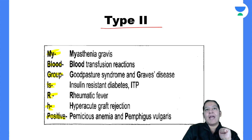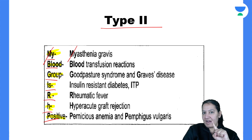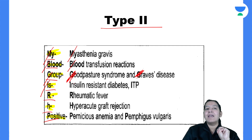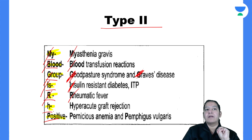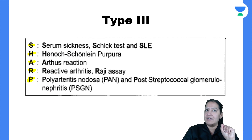Type 2 hypersensitivity — the mnemonic is 'My Blood Group Is RH Positive.' M stands for Myasthenia Gravis. B stands for Blood transfusion reaction. G is for two things: Goodpasture syndrome and Graves disease. I is for insulin-resistant diabetes mellitus or ITP. R is rheumatic fever. H is hyperacute graft rejection. E is pernicious anemia and Pemphigus vulgaris.